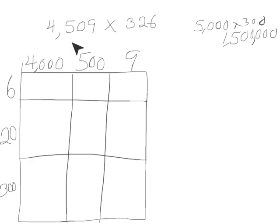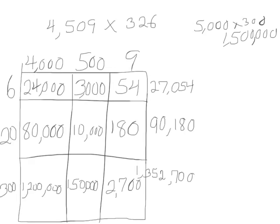We notice in one of our factors, 4,509, that there are no tens. So in our area model, we have a place for ones, for hundreds, for thousands. But we do not need to show the tens in this problem. Here we show the area model, 4,509, and 326.